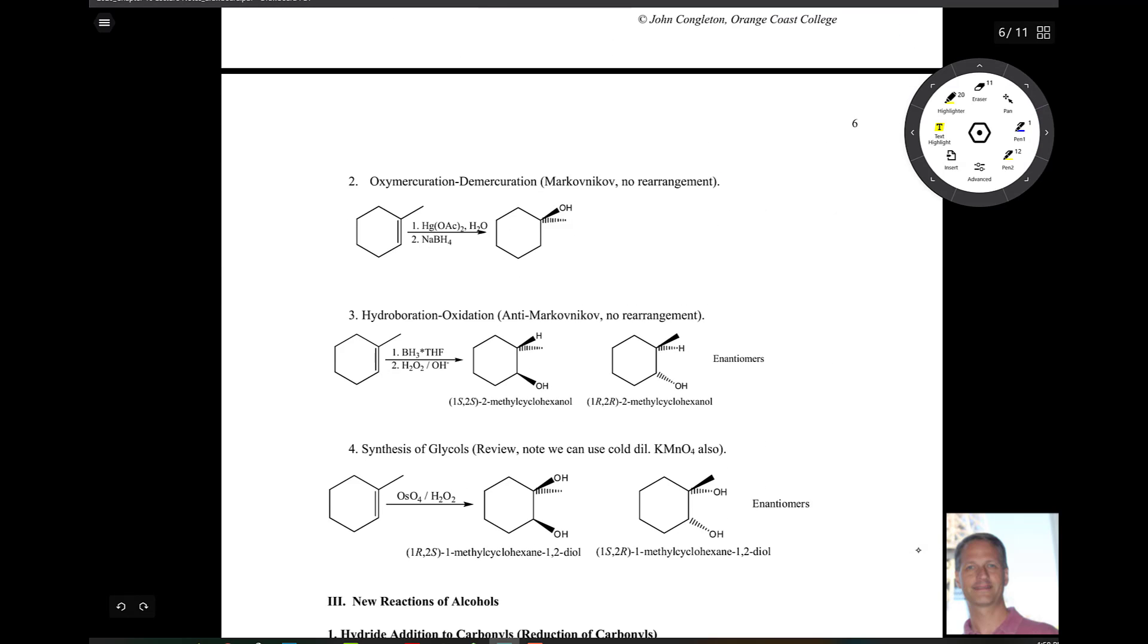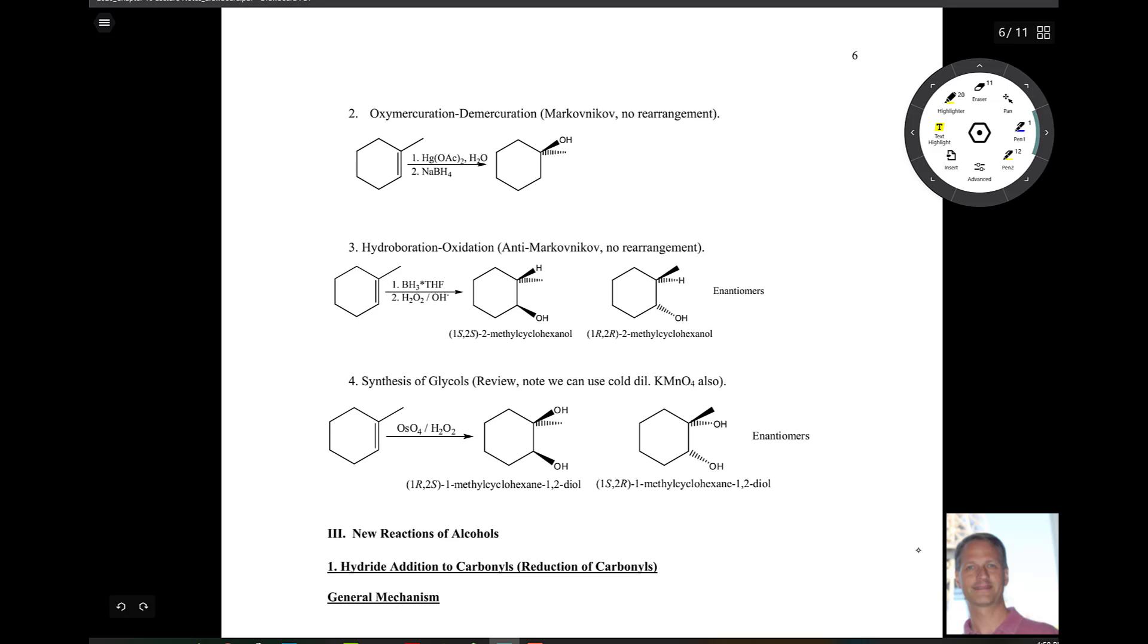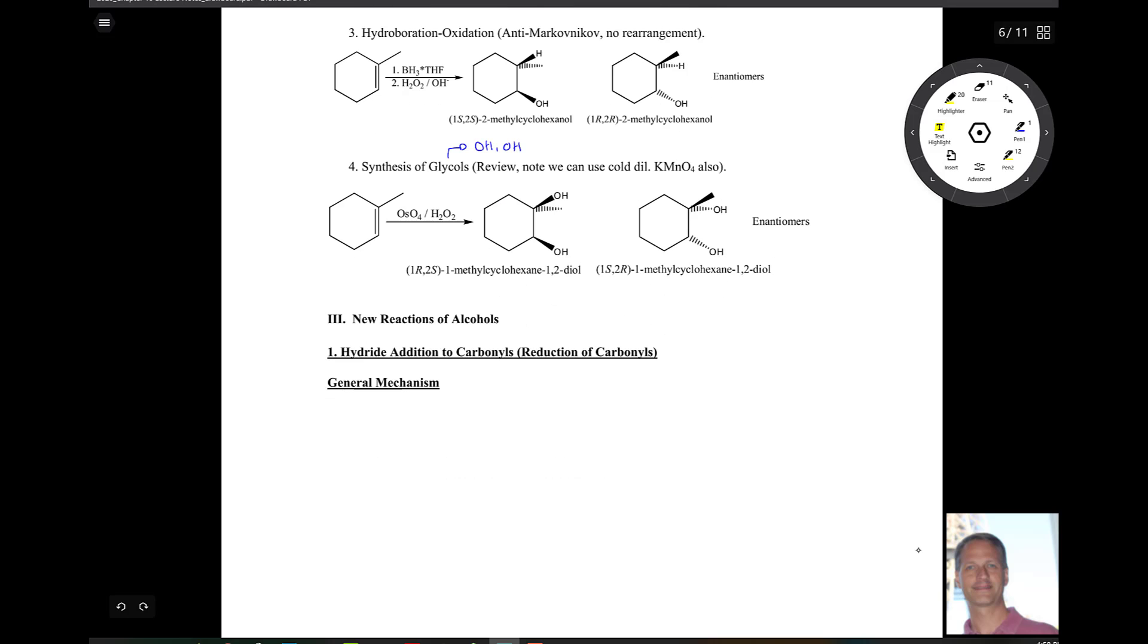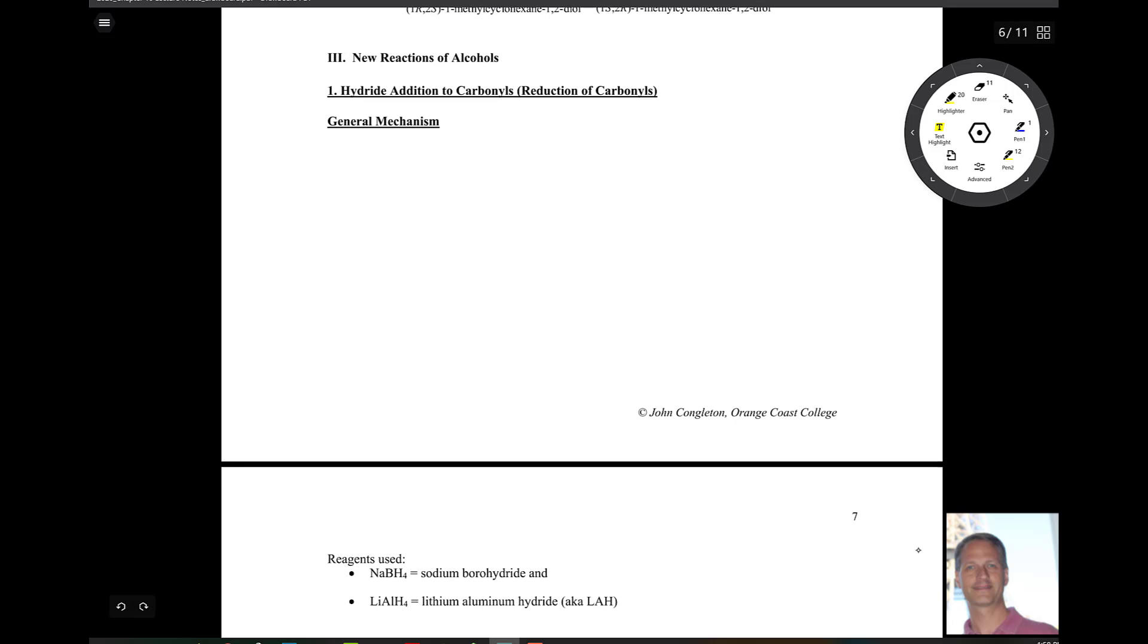Looking ahead here we have chapter 8 stuff: hydroxymercuration, demercuration, hydroboration, oxidation, and we can make glycols. Glycols are when we have two OH groups. Now let's look at some new stuff. That's what I want to spend most of our time talking about here.